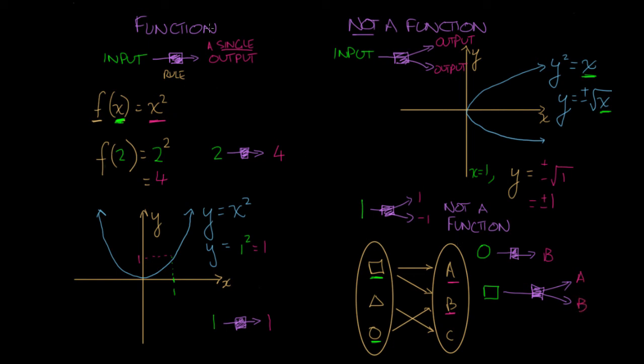And because it's more than a single output, this no longer represents a function. This is not a function. So these represented functions, these two examples were not functions. In the future, when you're doing these questions, always think about whether the input always generates a single output. If there's a single instance where the input generates two different outputs, then whatever rule you're considering is not a function.